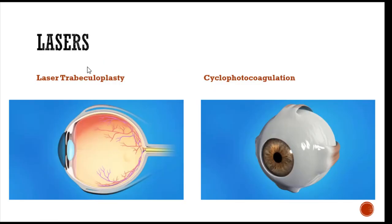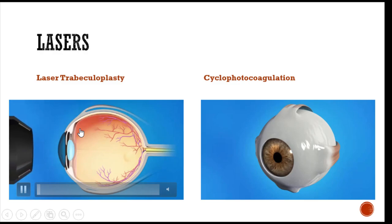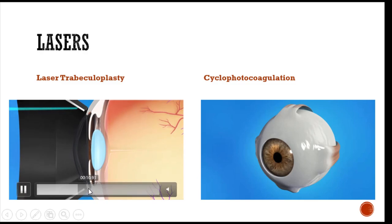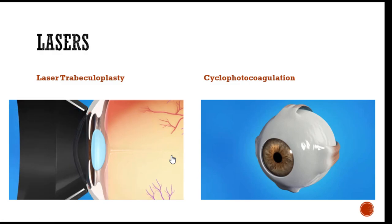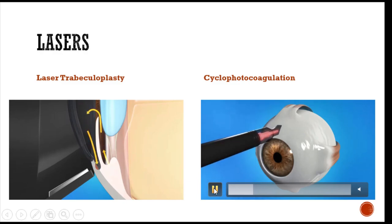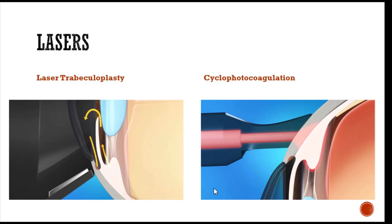The next modality is laser treatment, with three main types. First is laser peripheral iridotomy, already discussed. Second is laser trabeculoplasty, where a contact lens is used to strike the laser onto the trabecular meshwork, widening its pores and allowing greater filtration. Third is cyclophotocoagulation, used when surgery cannot be done or pressure is not adequately reduced — a trans-scleral diode laser is applied to the ciliary body to coagulate it and reduce aqueous production.